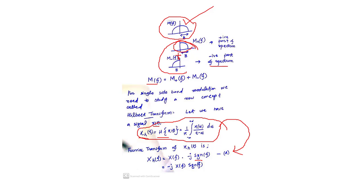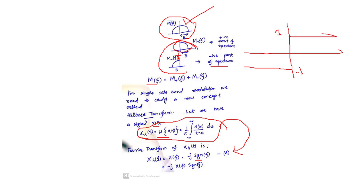The signum function sgn(f) is a function studied in signals and systems. It has value +1 for positive frequencies (f > 0) and value -1 for negative frequencies (f < 0). This form of function is called the signum function, and this is the Fourier transform of the Hilbert transform.